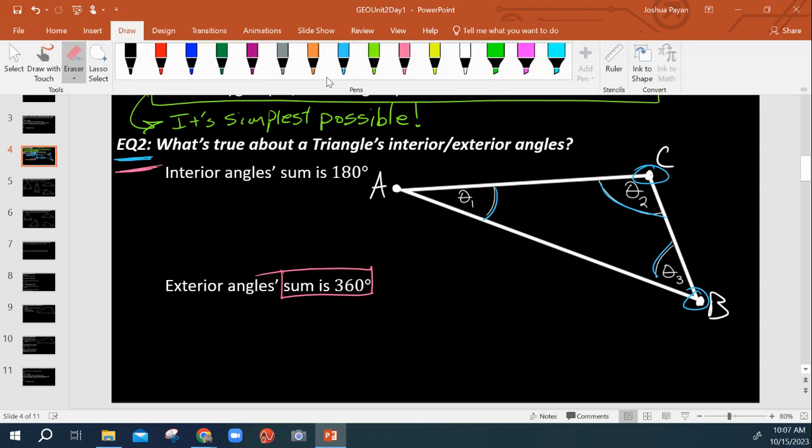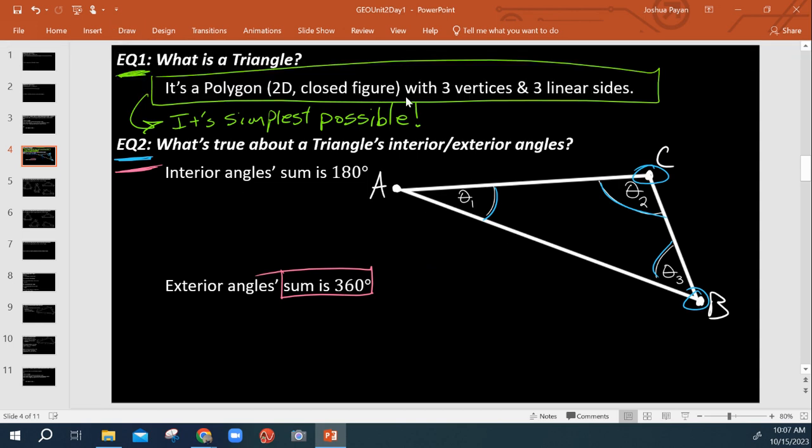So the interior angles are, as they imply, inside. The exterior angles, however, are also how they imply. They are the outside angles. So to put it simply, the exterior angles are the supplements to the interior angles.